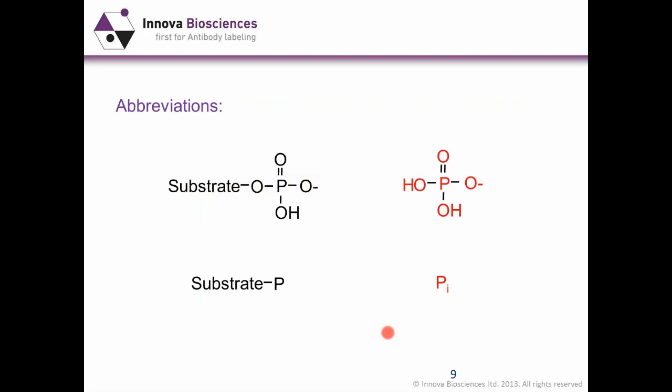Let's move on to phosphate. There are a lot of atoms in phosphate, so for simplicity we're going to abbreviate inorganic phosphate to PI, and organic phosphate — i.e. phosphate attached to a carbon-containing substrate — just as substrate P.